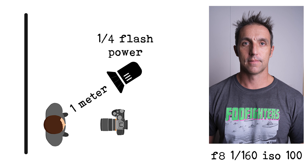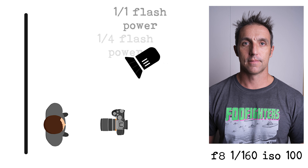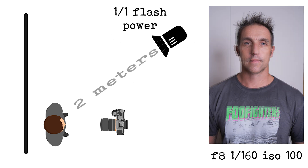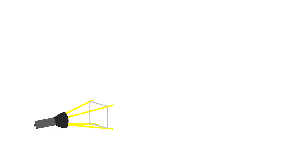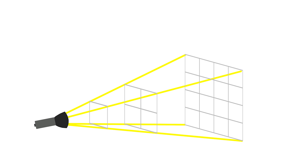If you have your flash one meter from your subject and you get good settings for the flash at quarter power, if you move the flash away by one meter so the overall distance has doubled to two meters from the light source to the subject, you'll have to increase the flash by two stops to get the same exposure. Basically the same amount of light will be covering four times the amount of surface as you double the distance, so it will give you a quarter of the intensity every time you double that distance.